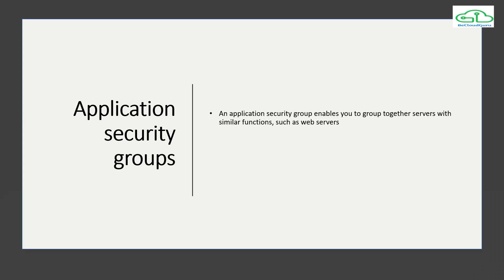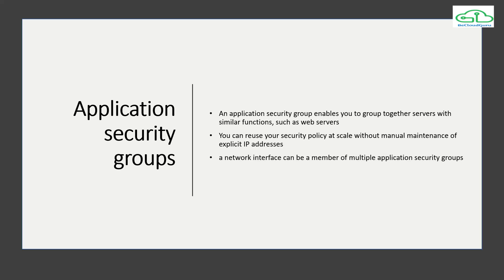What is an application security group? Basically, application security groups enable you to group together servers with a similar function, such as web servers, application servers, or database servers. By grouping them together in this manner, application security groups help with easy management of your security rules or policies through network security groups, allowing you to reuse those security policies without editing or maintaining IP addresses. Note that in application security groups you cannot create any security rules or policies as you can in network security groups.